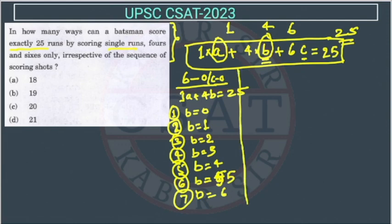Now we will take the second case. The second case is he is scoring 1 six, or we can say the value of c is 1. So in this case, the equation will be 1a plus 4b equal to - so plus 6 will come here. So I am taking that plus 6 here, we are subtracting it from 25. So we will get 19.